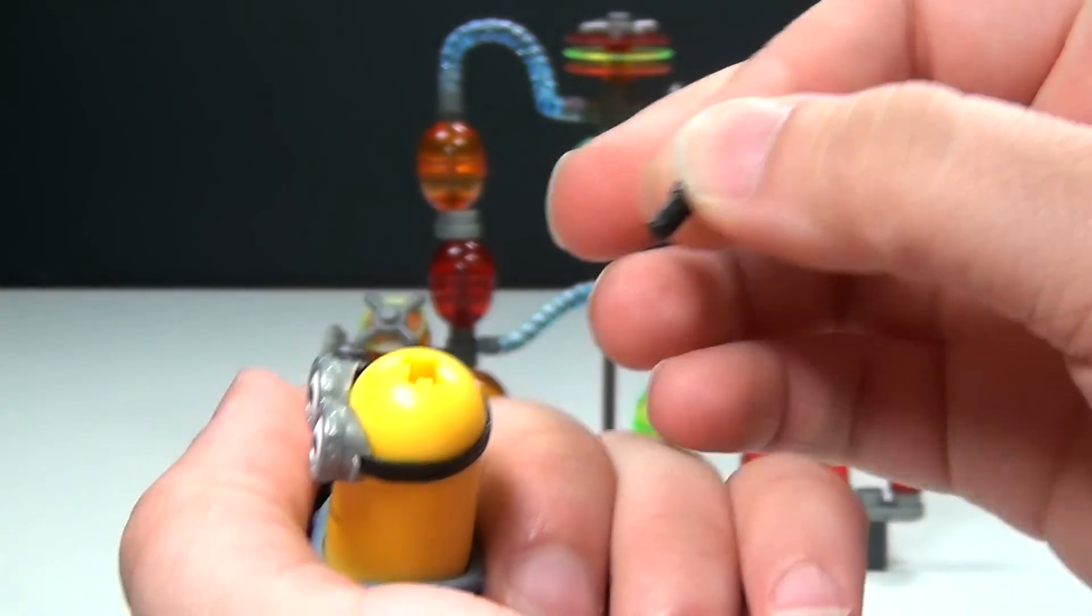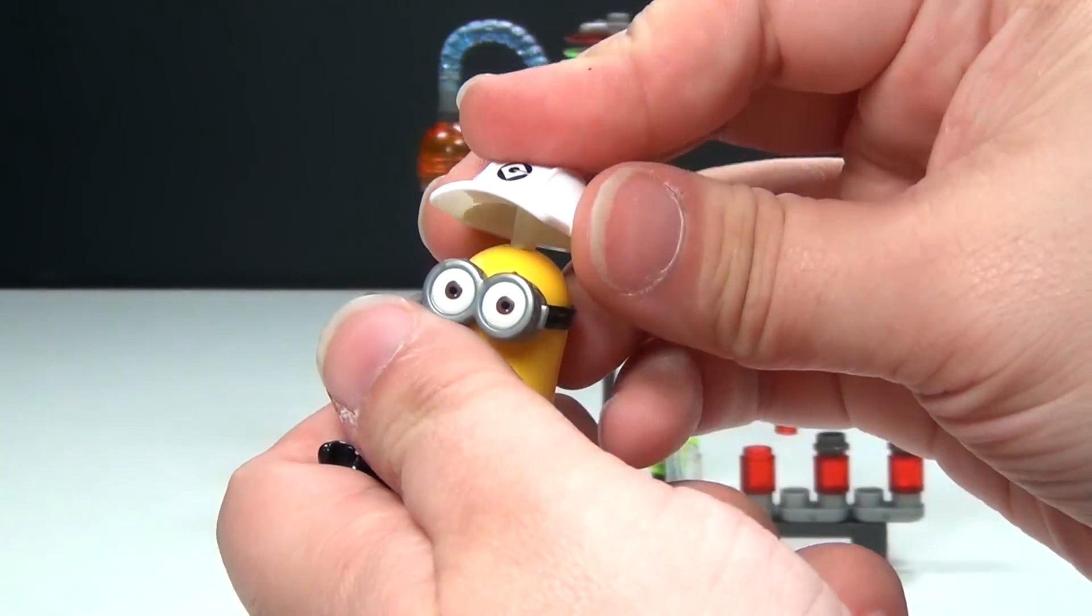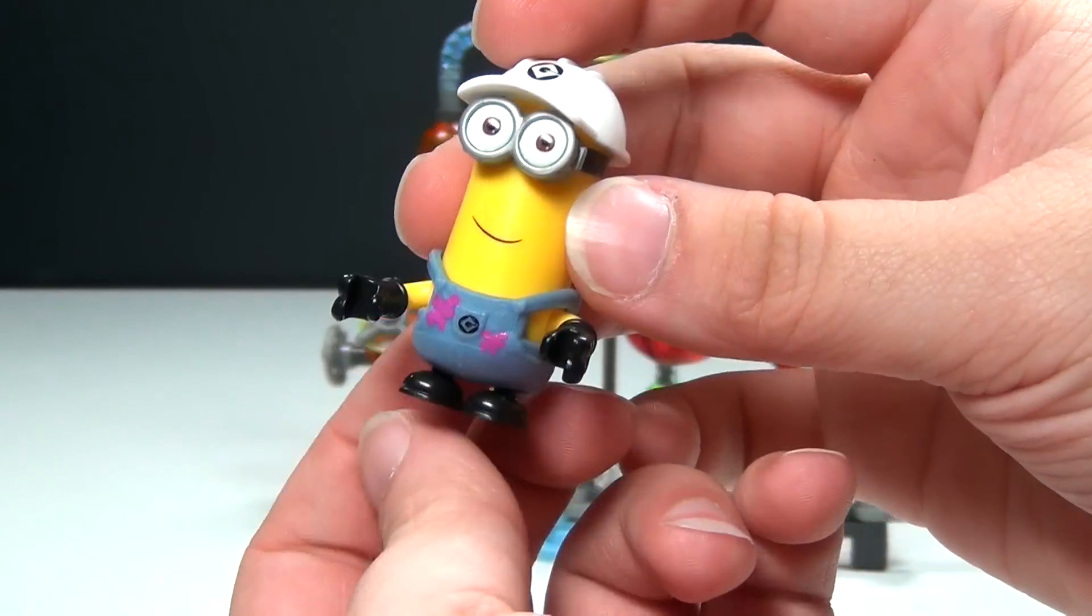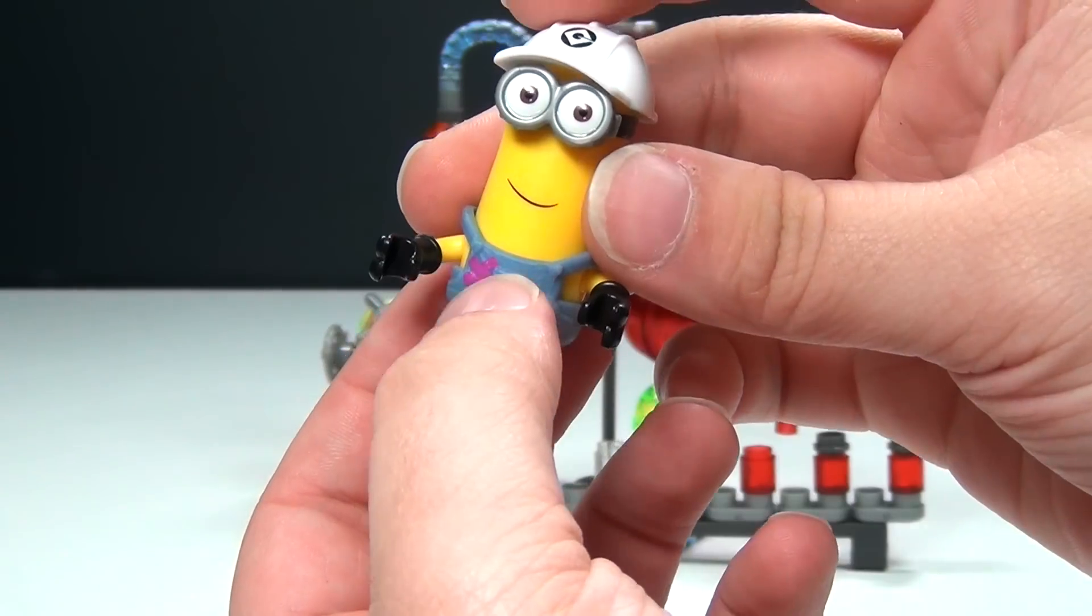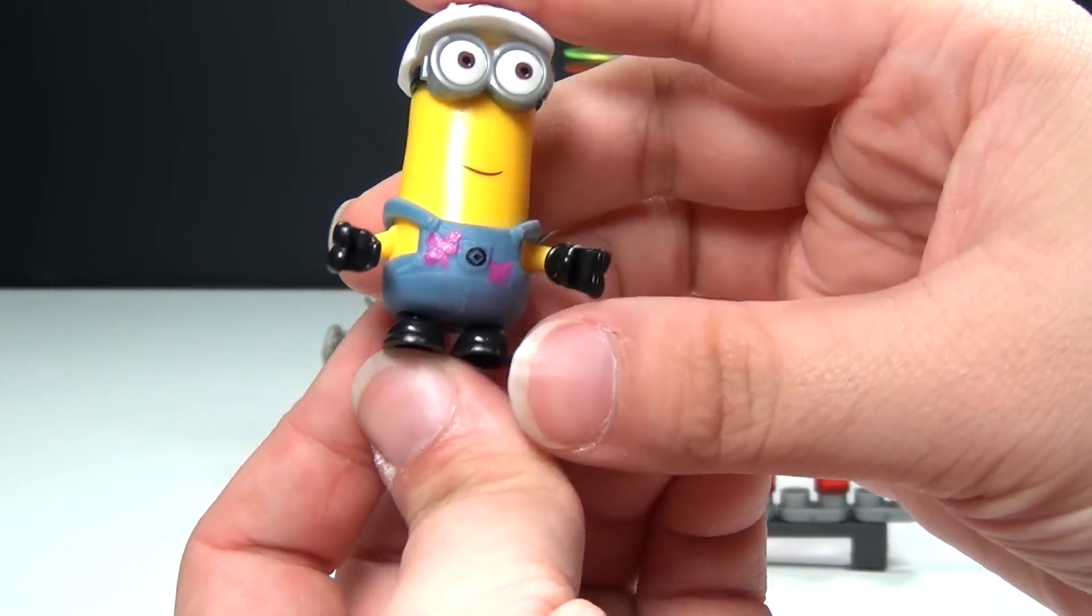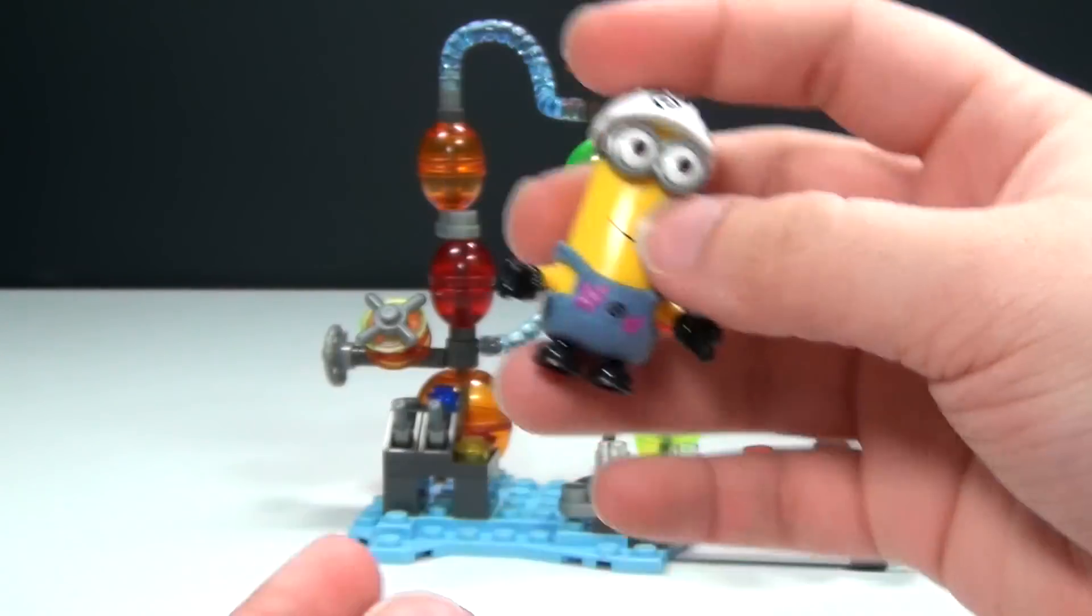Even the hair right here, you can take that off. And with this set, it also comes with this hat that you can swap out and put on him. And if you have other minions, you can take off the clothes and swap those out also. And swap the bodies out if you want to. So that's kind of cool.